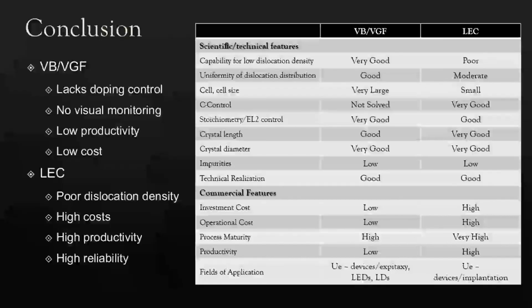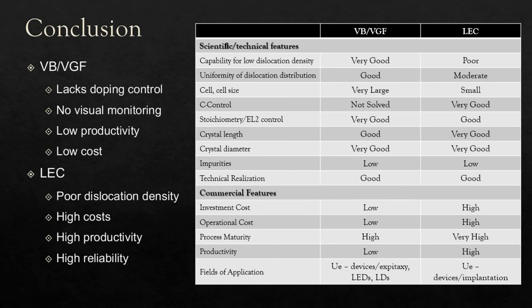Now that we have learned about gallium arsenide crystals, the LEC and Bridgman growth techniques, and their respective pros and cons, we can decide which method is better suited for device manufacturing. We have a table comparing the main features of GaAs crystals grown using either method. The VB/VGF method notably lacks control of carbon doping and crystal growth cannot be observed in real time, making it difficult for applications requiring high reliability. This approach also has lower productivity, but is compensated by low costs.